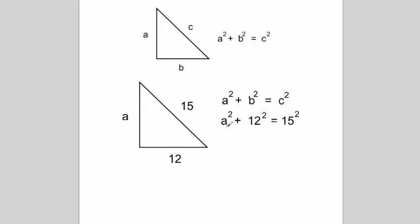Now, we want to find a squared, so we want to put a on its own. And we're going to do that by subtracting 12 squared from both sides. Subtract 12 squared from this side, and you get a squared on its own.